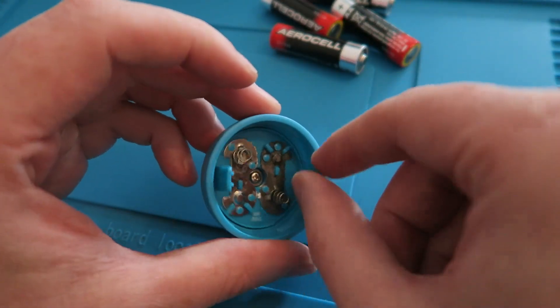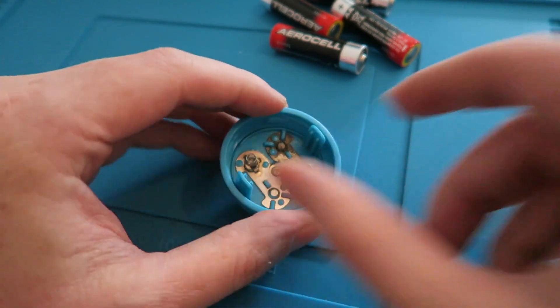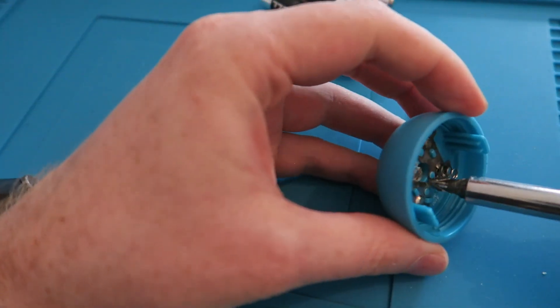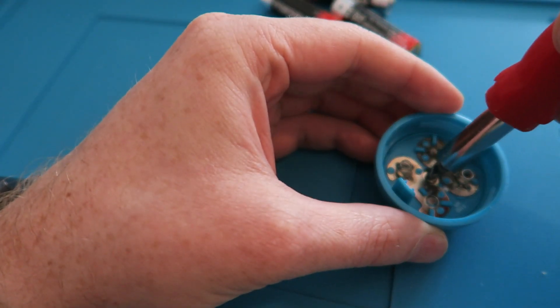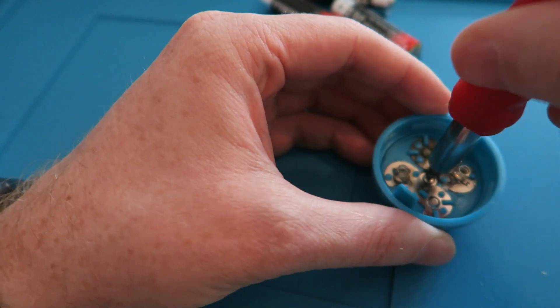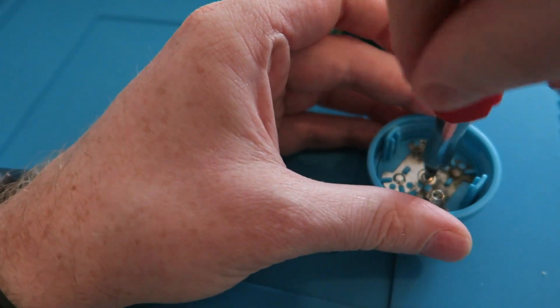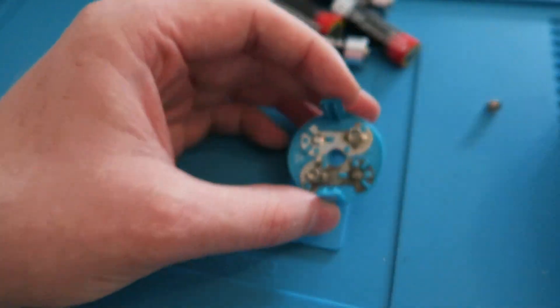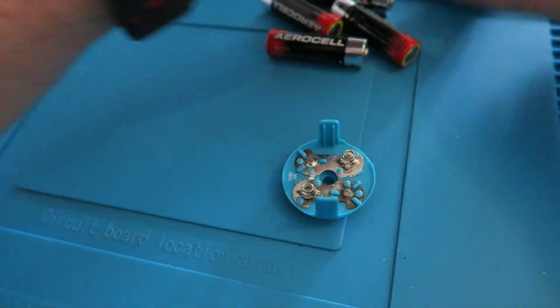So the first thing I'm going to do is this bit seems to come out because there's a screw in the belt. So I'm going to remove this. Pop him out and there we go, that's come out.